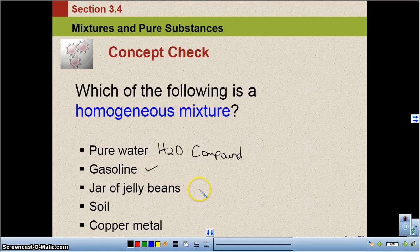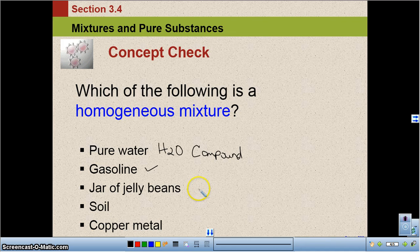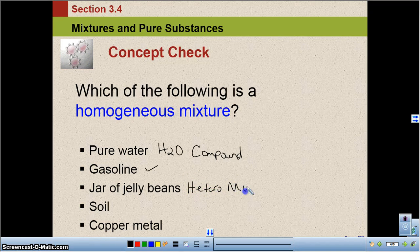A jar of jelly beans. So you stop and think about a jar of jelly beans. If you have a jar and I have a jar, we both have jars of jelly beans. However, they're not evenly distributed throughout. So what we would see with jelly beans is a heterogeneous mixture.